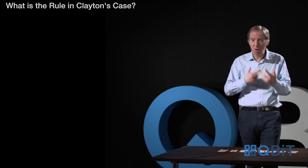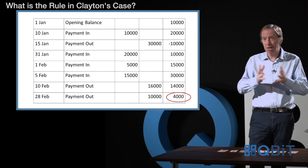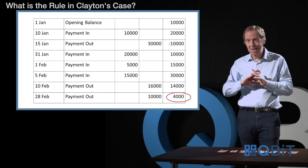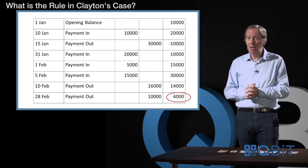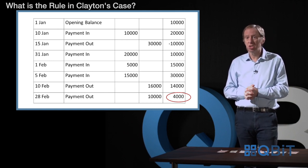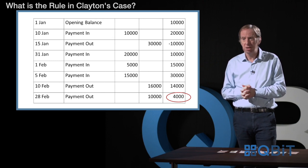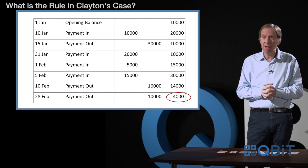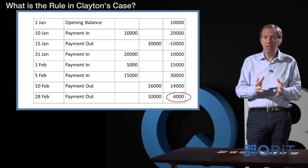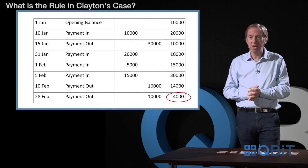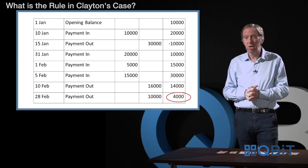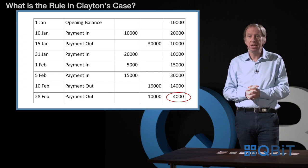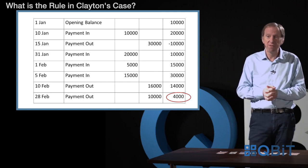If we're dealing with a credit situation, here we have the same sort of account but this time ending up with a credit balance — you do exactly the same thing. Look at the last balance, the 28th of February, and it's £4,000. What's that made up of? Look at the payments-in column and work backwards. The first payment in going backwards is on the 5th of February — that's £15,000, which is more than £4,000 — so the £4,000 credit balance is £4,000 out of that £15,000.